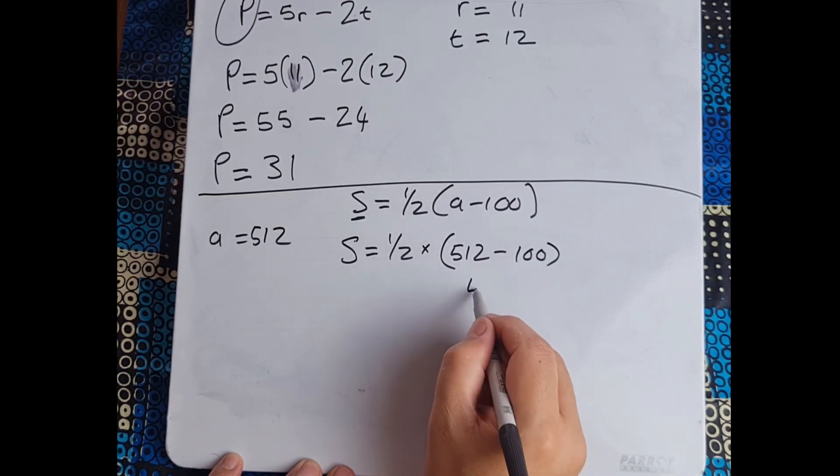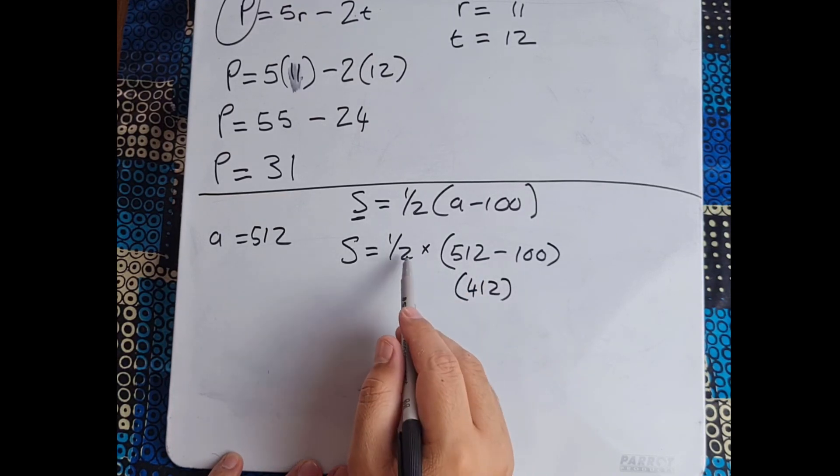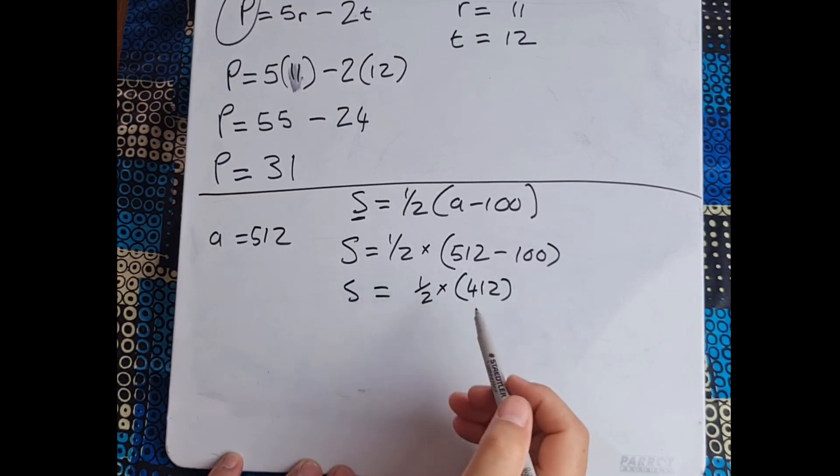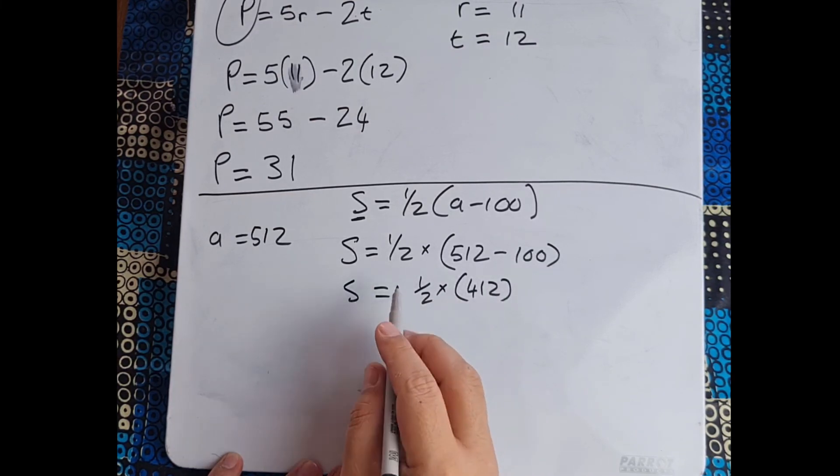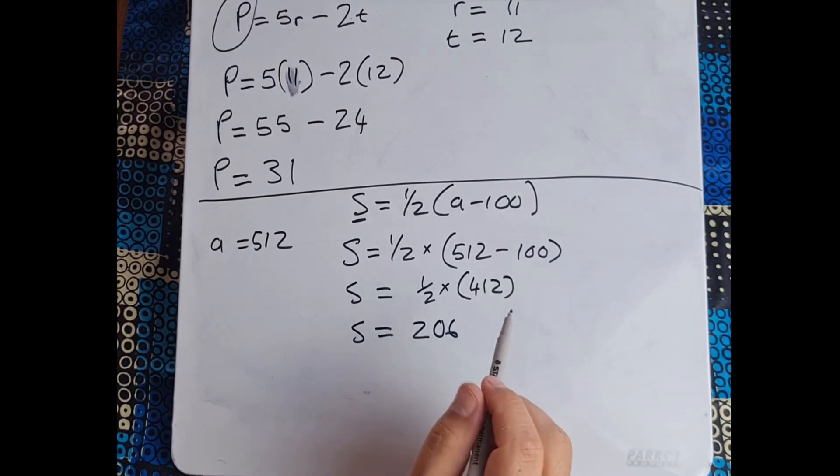And that will give us 412 and it's now going to be a half multiplied, in other words what is the half of 412? Therefore s equals 206.